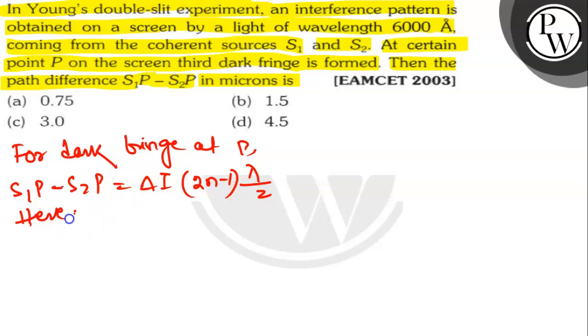Here n is equal to 3 and lambda is equal to 6000 Angstrom.